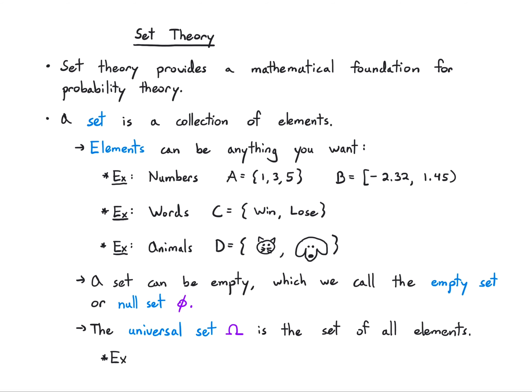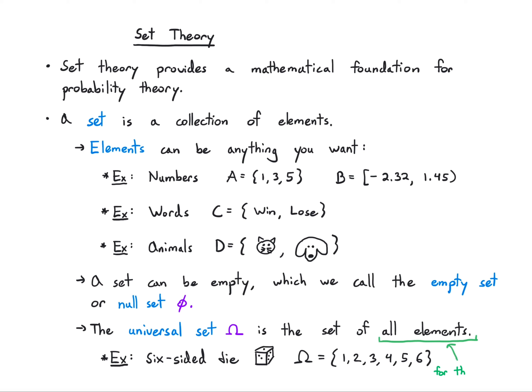As an example, let's say I'm interested in rolling a six-sided die. The elements in that case are just 1, 2, 3, 4, 5, 6. The important thing to keep in mind is that 'all elements' is with respect to the context I'm interested in. When I was describing the six-sided die, the universal set did not include cats and dogs — that's only if I was interested in animals. So 'all elements' is really in the context that we're thinking about.